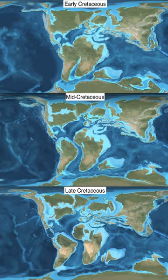The Cretaceous ended with the Cretaceous-Paleogene extinction event, a large mass extinction in which many groups, including non-avian dinosaurs, pterosaurs and large marine reptiles, died out. The end of the Cretaceous is defined by the abrupt Cretaceous-Paleogene boundary, a geologic signature associated with the mass extinction which lies between the Mesozoic and Cenozoic eras.